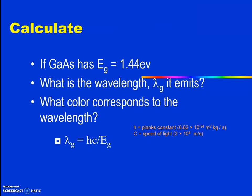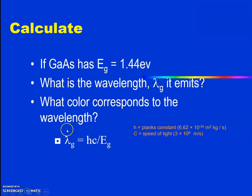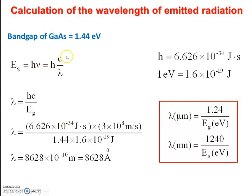Let us look at one problem: for gallium arsenide, whose energy gap is 1.44 electron volts, what is the emission wavelength? Using the formula EG = hC/λ, substituting EG = 1.44 eV (converting to 1.6×10⁻¹⁹ joules), with Planck's constant h and speed of light C, we get a wavelength of approximately 862 angstroms — just above the red color wavelength. In short, we can use the formula: λ (nm) = 1240 / EG (eV), which gives the corresponding wavelength in nanometers.